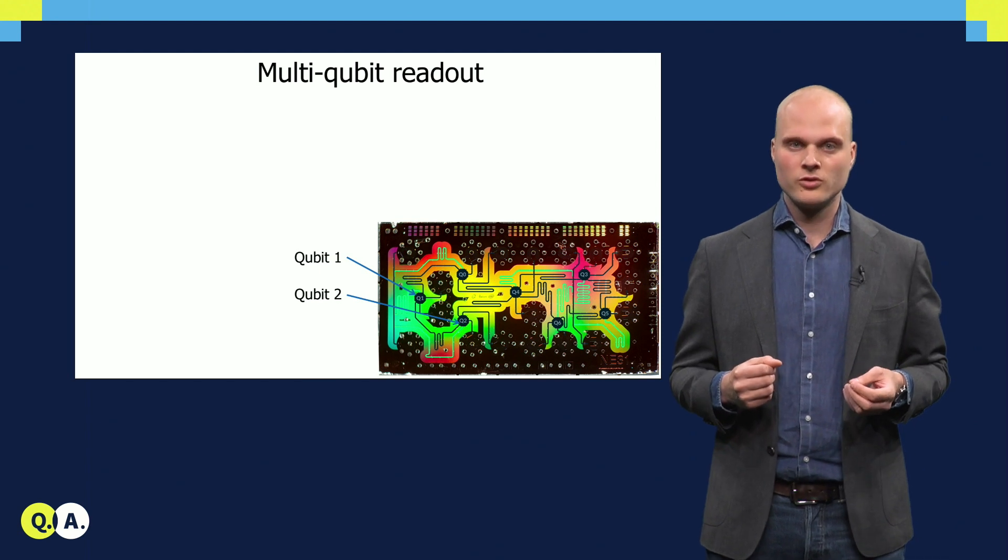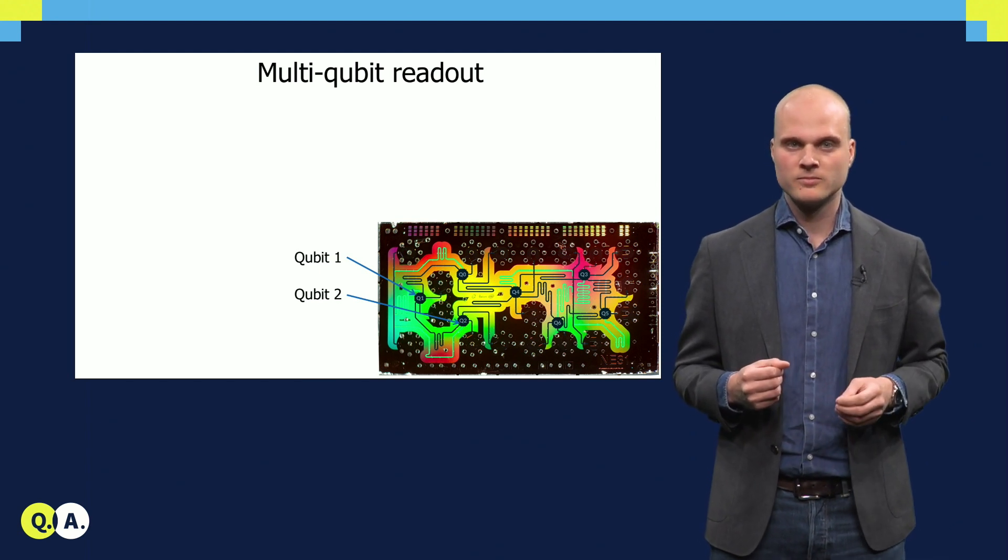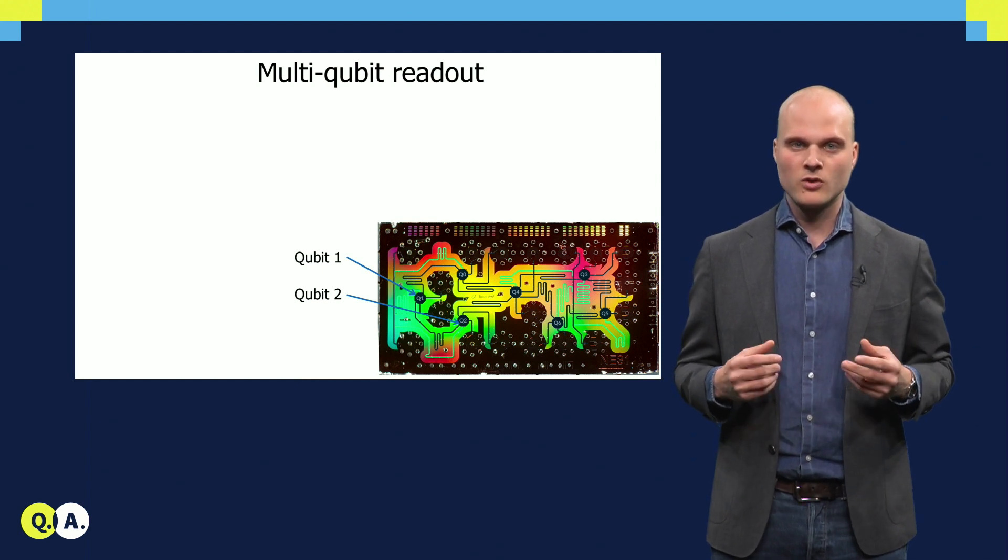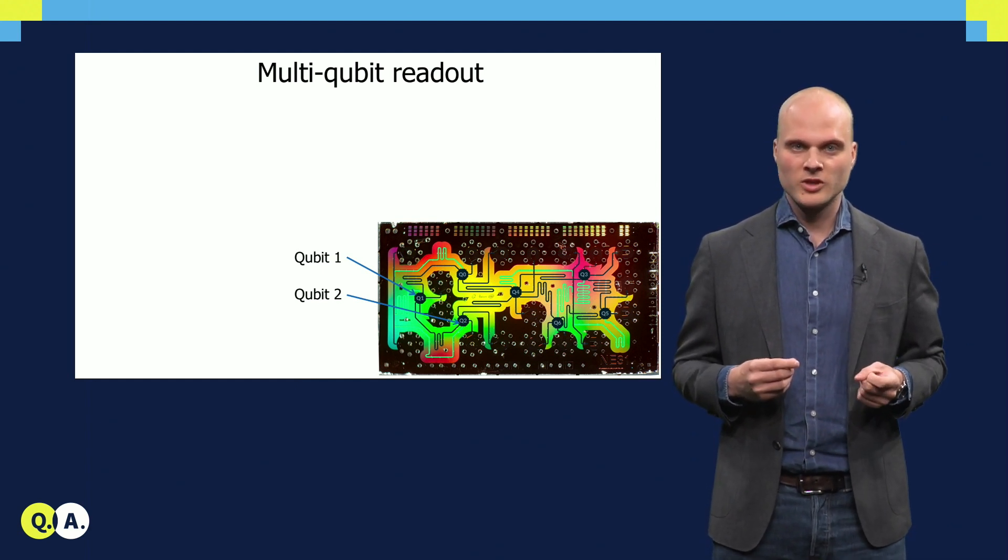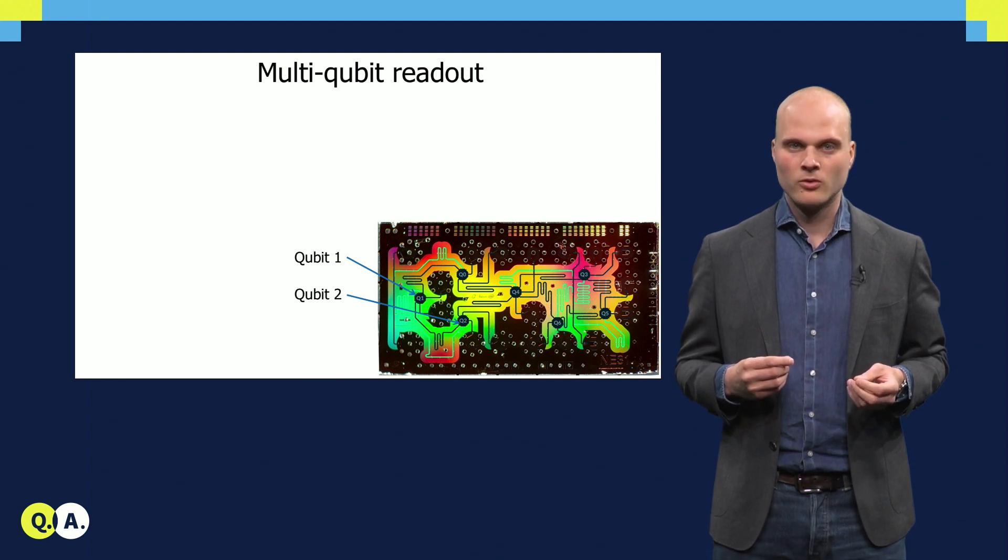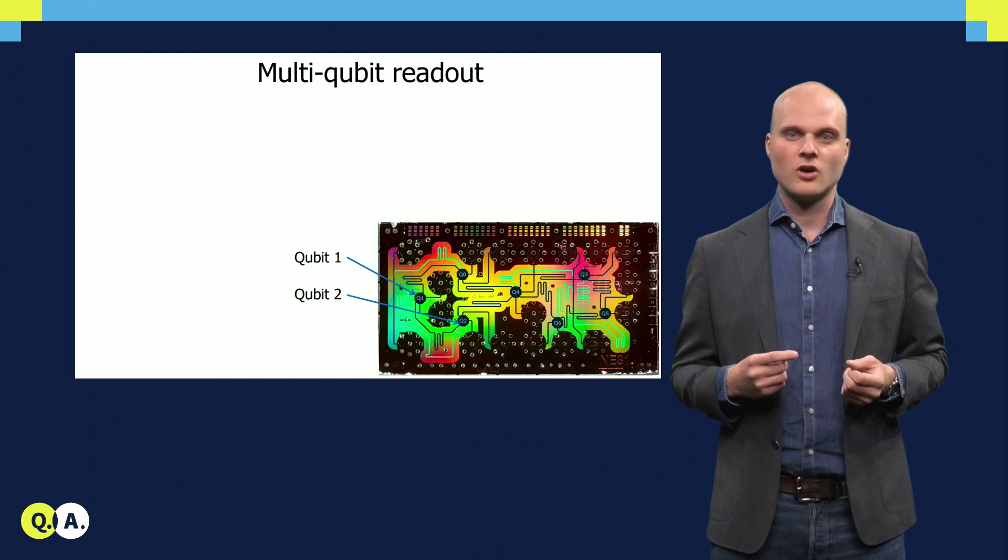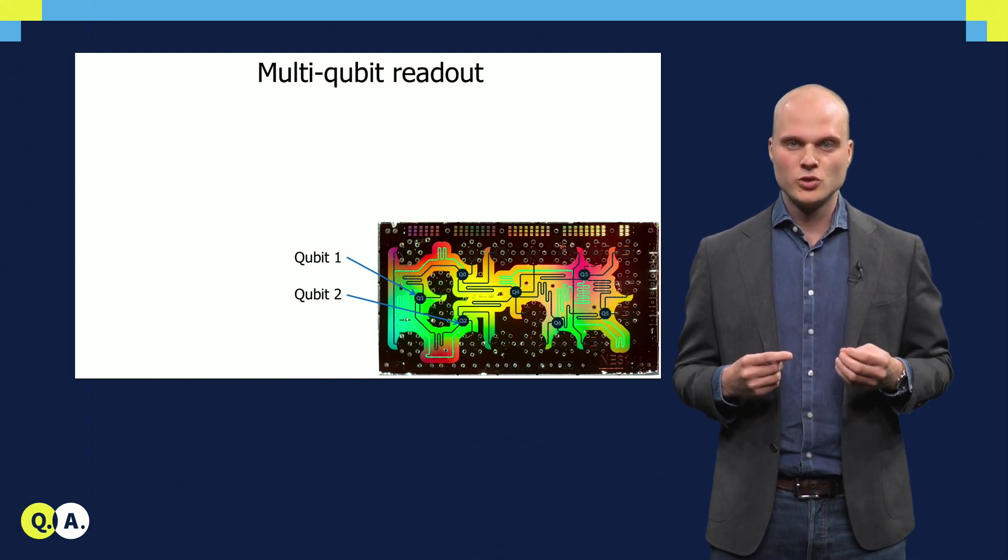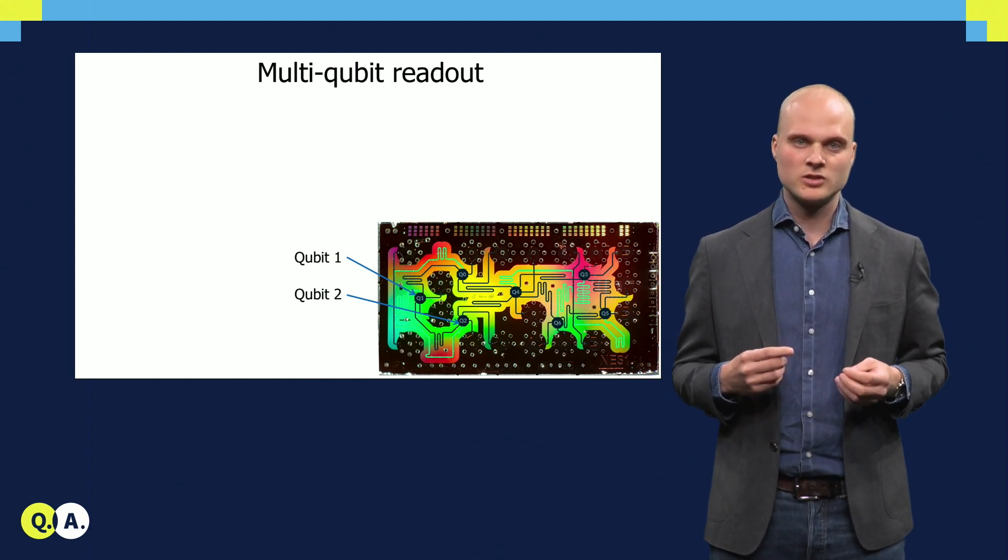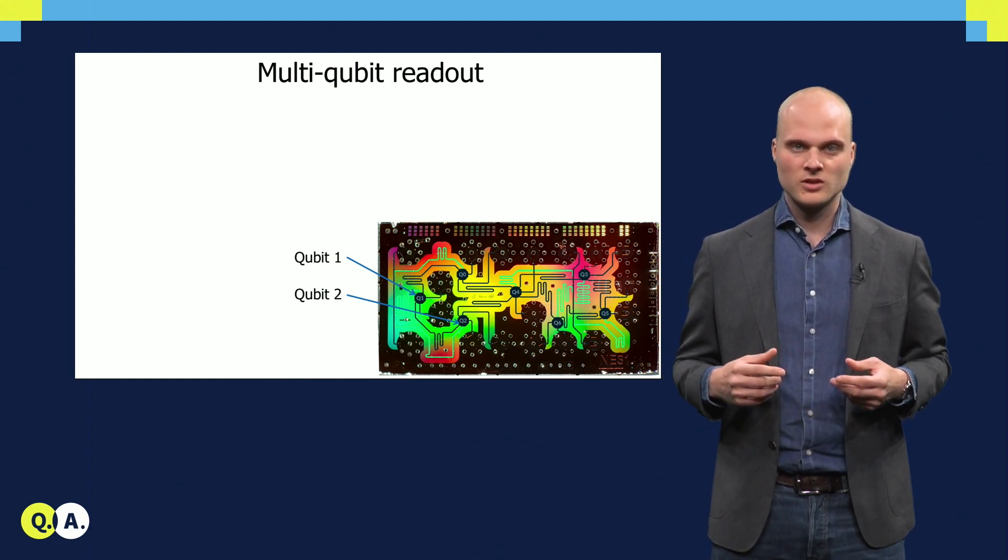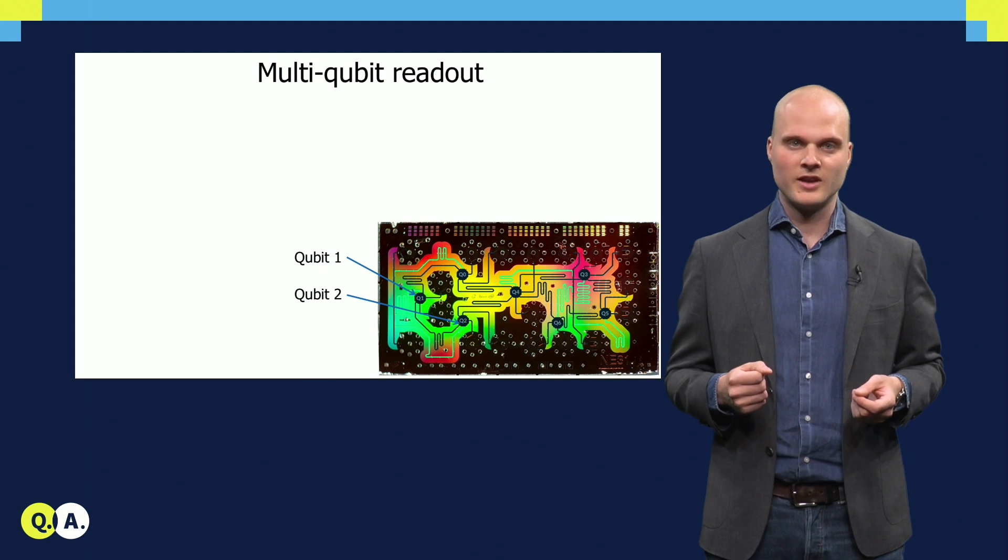I have just shown you the readout of one qubit. Of course, a full quantum computer consists of many quantum bits, and these quantum bits all have to be read out at the same time. To allow the simultaneous readout, we couple each qubit to its own readout resonator and choose the lengths of the resonators such that they resonate all at a distinct frequency, just like the different strings in a piano.